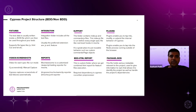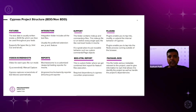The integration folder includes all the test files — the spec files. Preferred extensions are .js and .feature. For non-BDD tests, .js files are used; for Cucumber-based BDD tests, .feature files are used. We also have step definition files inside this integration folder.